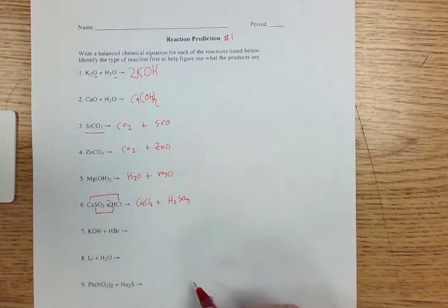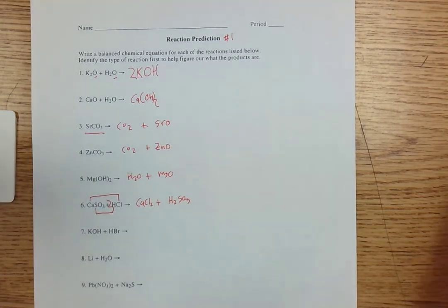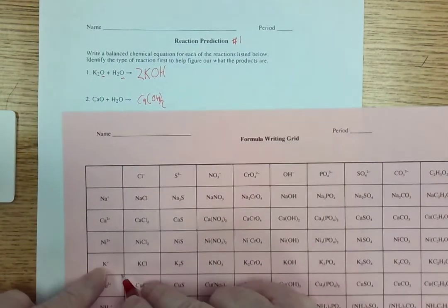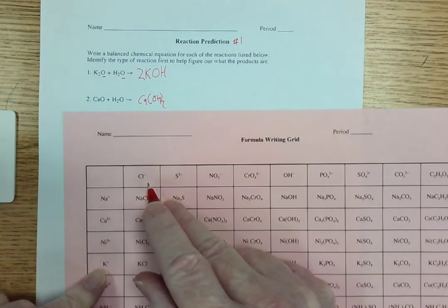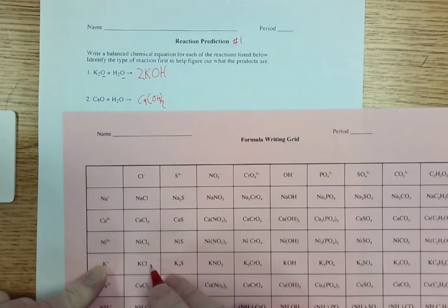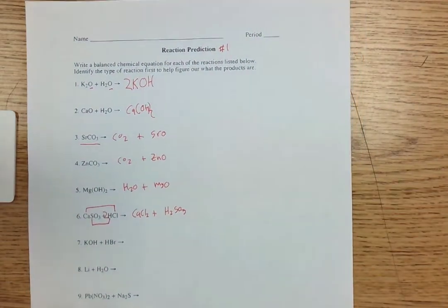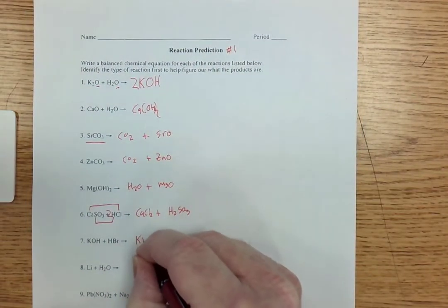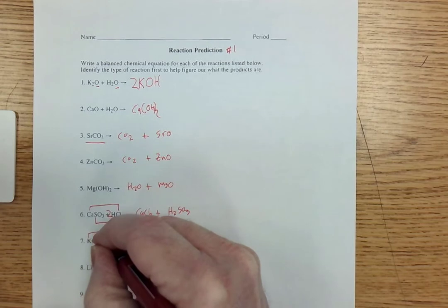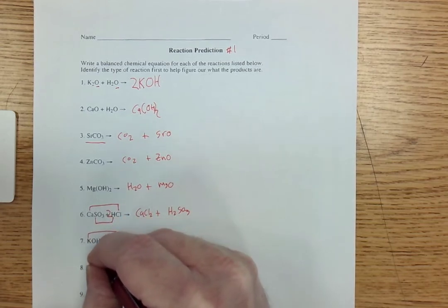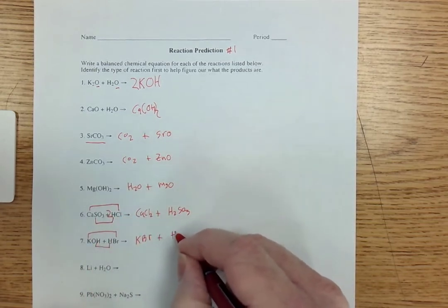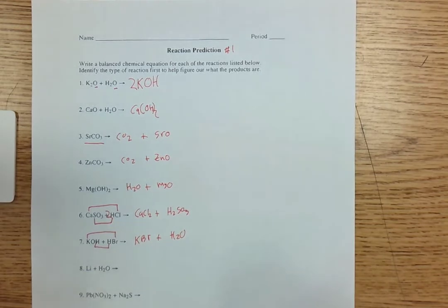Again, double replacement in number seven. K is going to hook up with bromide. I have my bromide, but I got chloride, which is in the same group of the periodic table. So KCl means it's going to be a KBr when this hooks up with this. H and OH, that gives us water, and it's already balanced.